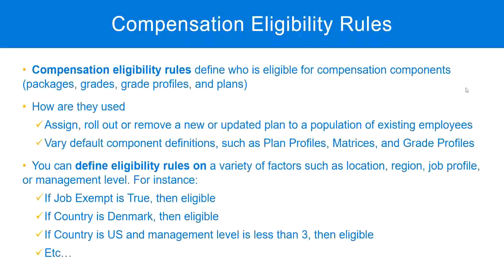Similarly, regions in a region hierarchy. If you write the rule based on the region hierarchy, or the company hierarchy, or cost center hierarchy, you don't have to individually add cost centers, companies, or locations into your eligibility rules. That makes the configurations much simpler if you are grouping your components into some form of hierarchy.